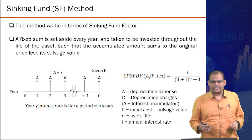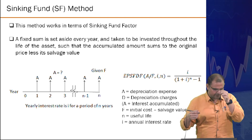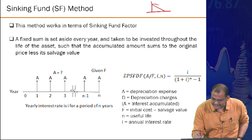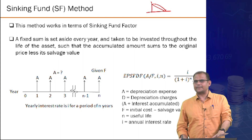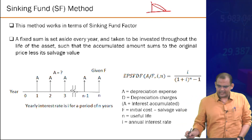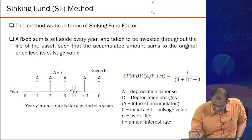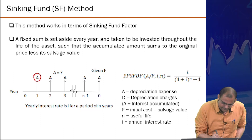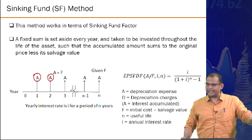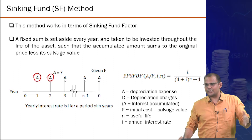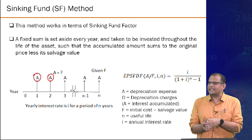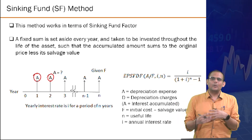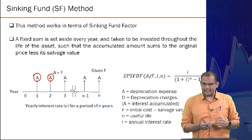Finally, the sinking fund method: in this approach, a fixed amount A is set aside each year so that at the end of the asset's life period, you can replace the asset. You calculate A such that by year N the accumulated fund equals F minus S, where F is the future replacement cost and S is the salvage value from selling the old asset.